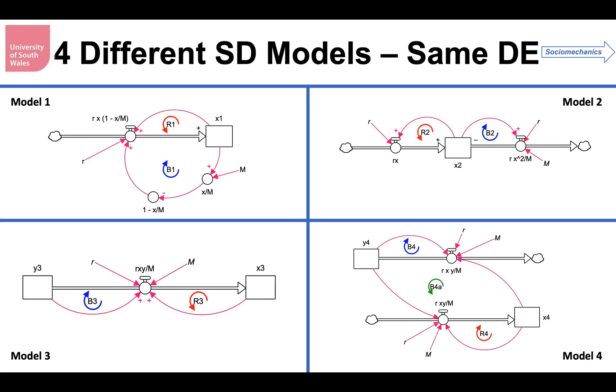So what's the difference between these four models? There obviously are different stock flow models, but they all have the same underlying differential equation. Why are they different? The reason why they're different is what the stock flow model does is it expresses the order of computation in which these will be worked out. You've got to imagine this is running as a numerical simulation. That numerical simulator has to work out, in this case, which would it evaluate first.